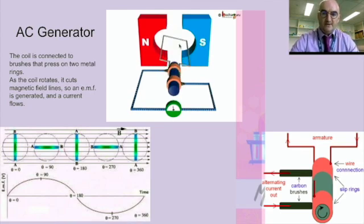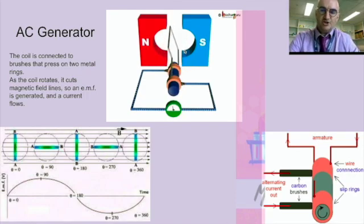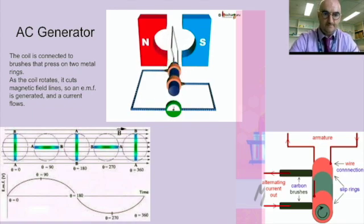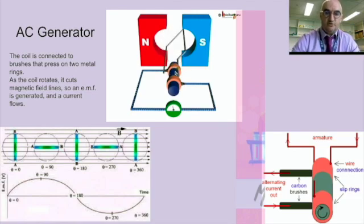This is the magnet. This spinning rectangle here is called the armature, A-R-M-A-T-U-R-E, which is spinning in response to its position in reference to the magnetic field.